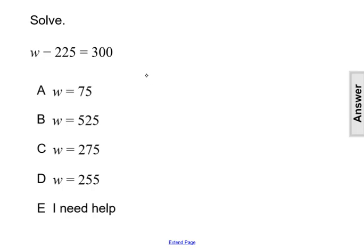In our equation here, we have w minus 225 equals 300. The variable is not by itself on the left side of the equation. That variable w is being subtracted by 225.